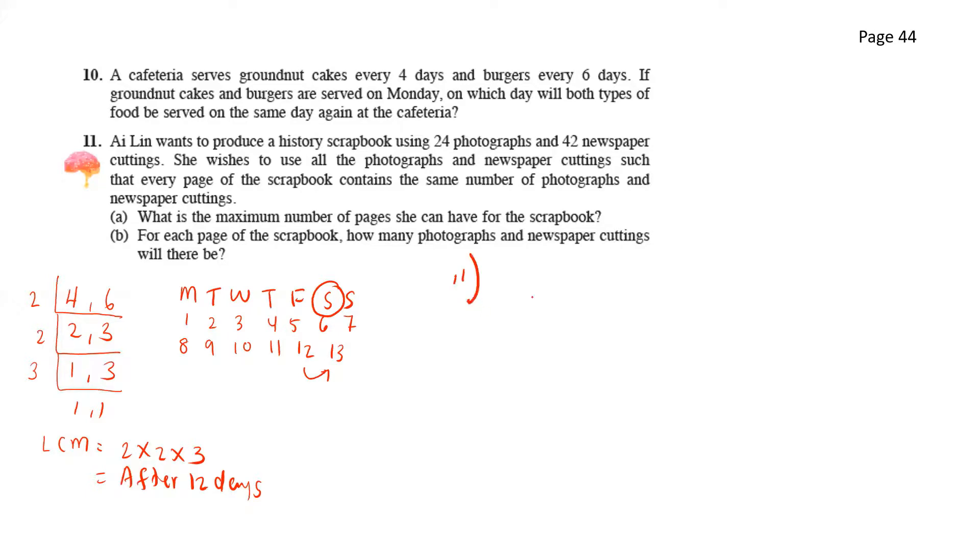For 11, Eileen wants to produce a history scrapbook using 24 photographs and 42 newspaper cuttings. She wishes to use all the photographs and newspaper cuttings such that every page of the scrapbook contains the same number of photographs and newspaper cuttings. What is the maximum number of pages she can have for the scrapbook? So here we'll be looking for the highest common factor. For A, we have 24 and 42. So to find the highest common factor, we will divide this by 2. That will give us 12 and 21. Dividing this by 3 gives us 4 and 7. So since we're looking for the highest common factor here and these numbers cannot be divided by any other common factor, so this will be all. And the HCF that we get will be 2 times 3. So that will give us 6 pages.